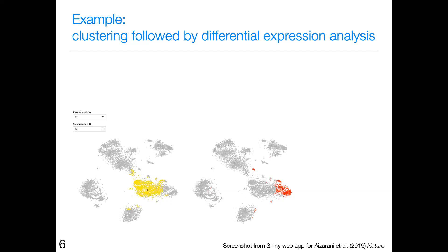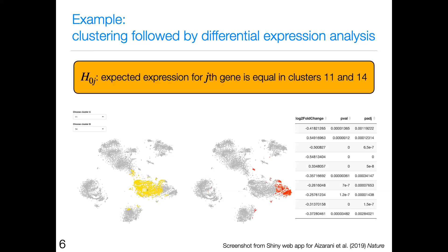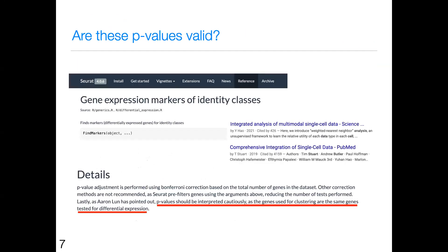Basically, the way this works, you can specify which cluster you want — like cluster 11 and cluster 14 — and then what this website allows you to do is output a p-value for each gene. The j-th p-value tests the null hypothesis that the expression for the j-th gene is equal in clusters 11 and 14, where the reason we're interested in those clusters is because that's what was input. This is not only something that people are doing in Nature papers, it's something they're releasing Shiny apps for.